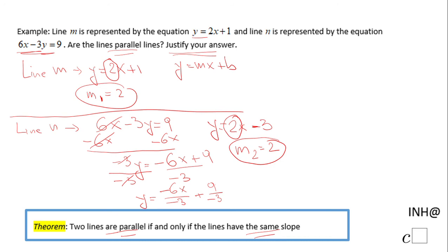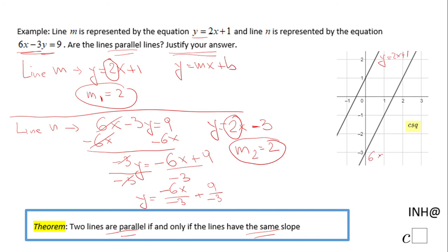We can take a look also at the graph. The first line here is Y equals 2X plus 1, and this one here, if you want to graph it, you may want to use the intercepts. Actually, you may want to use this form, the slope intercept form. And you notice these two lines are parallel lines.